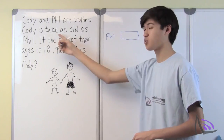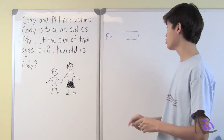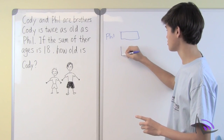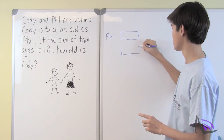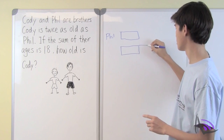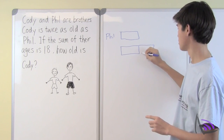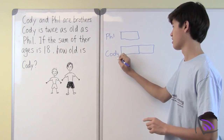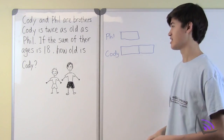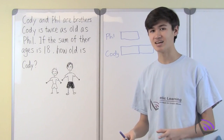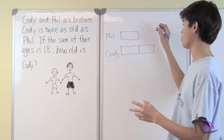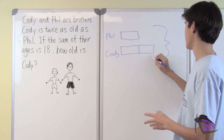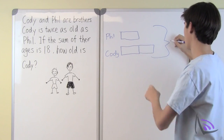Since Cody is twice as old as Phil, we can use the same bar for Phil but just use it twice, so we'll be using two of Phil's bars to represent Cody's age. They also tell us that the sum of their ages is 18, which means these three blocks add up to 18.